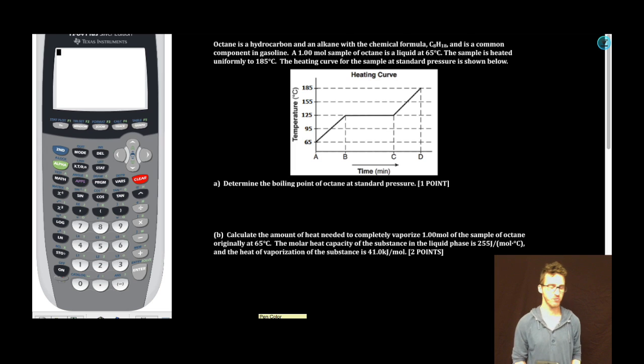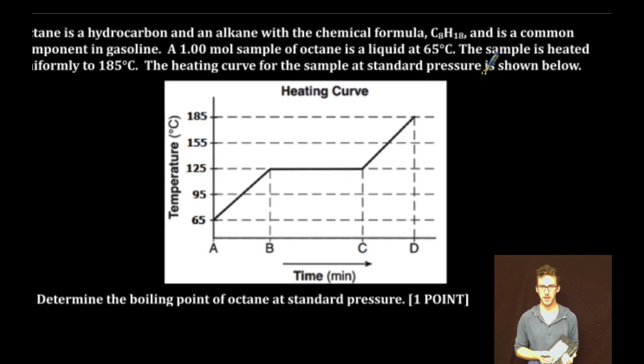Hey what's up my chemistry people! Who is ready for a thriller of a free response practice question? Try to stay seated but I totally understand if you have to get up because you're just too excited. Octane is a hydrocarbon and an alkane with chemical formula C8H18 and is a common component in gasoline. A 1.00 mole sample of octane is a liquid at 65 degrees Celsius. The sample is heated uniformly to 185 degrees Celsius. The heating curve for the sample at standard pressure is shown below.